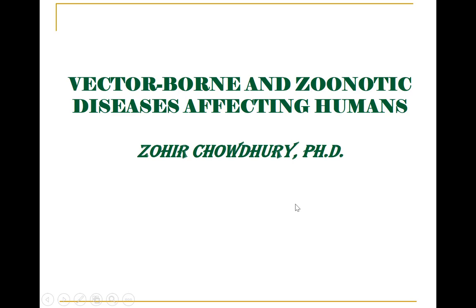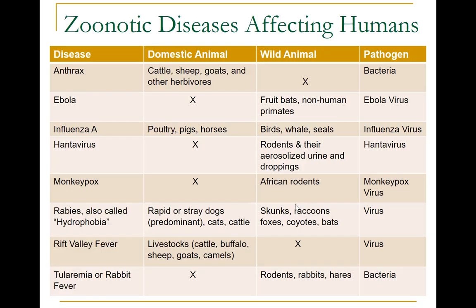Hello everybody, my name is Zuhair Choudhury and today we'll talk about vector-borne and zoonotic diseases affecting humans. Zoonotic diseases affecting humans are shown in this table, which lists some of the most important zoonotic diseases, the host or reservoir that harbors the pathogen, and the pathogen type. The animal host or reservoir is further divided into domestic and wild animals, and an X indicates that type of animal is not currently the predominant host or reservoir.